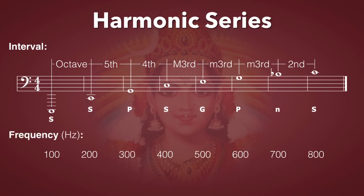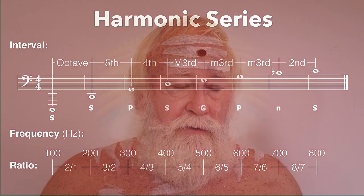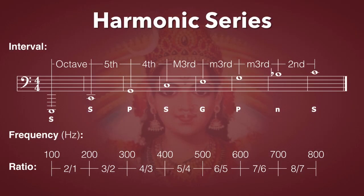For example, if the base frequency is 100 hertz — vibrations per second — then the next harmonic is going to be 200, then 300, 400, 500, and so on. You'll also notice that the distance or interval between the notes are the names of the musical intervals: octave, fifth, fourth, major third, minor third, second, and so on. All the intervals of the scale are derived from the harmonic series.